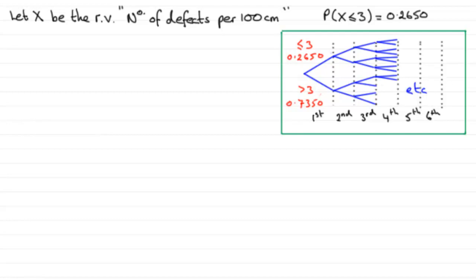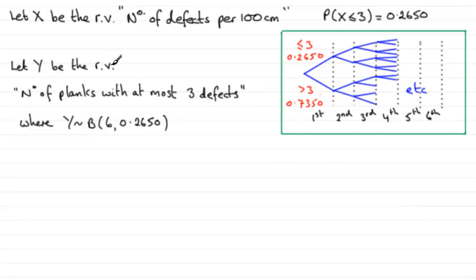What we can say is, define a new random variable, let's say we call it Y. Let Y be the random variable number of planks with at most 3 defects, where Y follows a binomial distribution, n the number of trials is 6, and the probability of getting at most 3 defects is 0.2650.